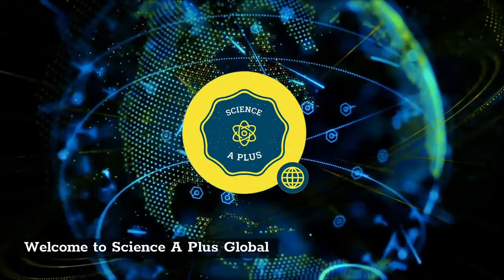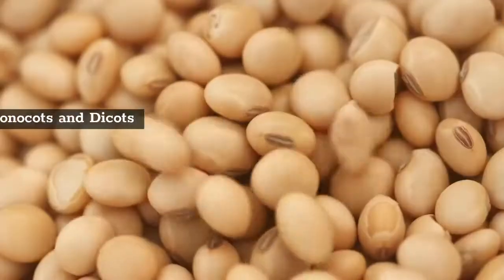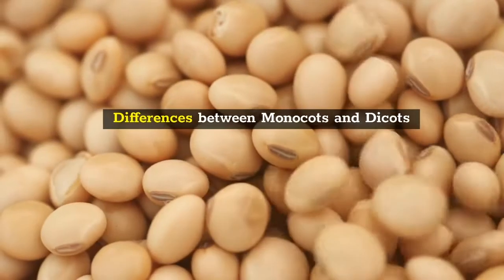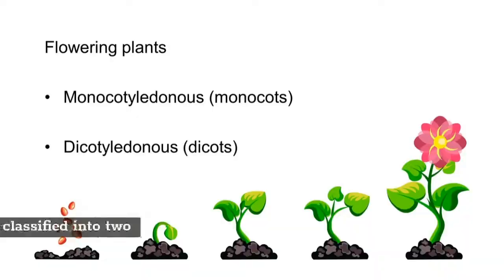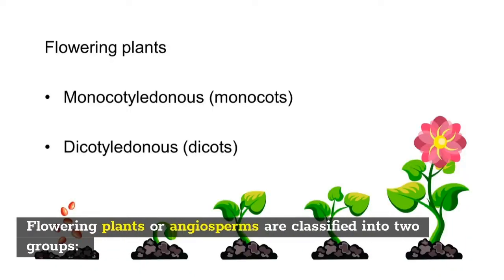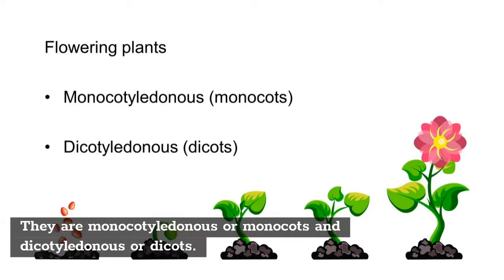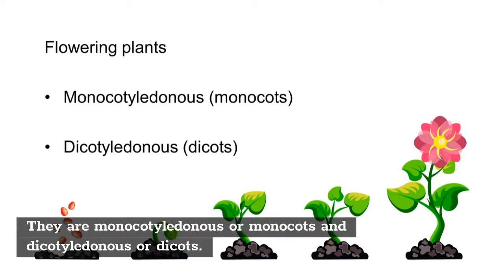Welcome to Science A-plus Global. Differences between monocots and dicots. Flowering plants or angiosperms are classified into two groups: monocotyledonous or monocots, and dicotyledonous or dicots.